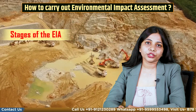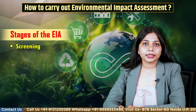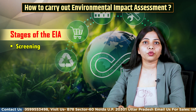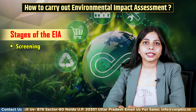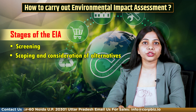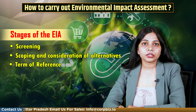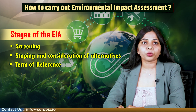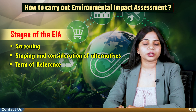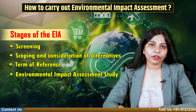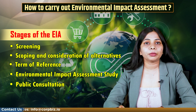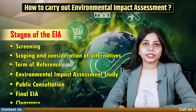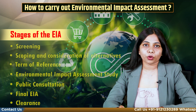Now let's see the stages of EIA. First is screening, where the scrutiny agency will identify whether the B category project falls under B1 or B2. Second is scoping and consideration of alternatives. Third is term of reference, which consists of methodology, scope of the project, and timeline for carrying out environmental impact assessment. Fourth is the environmental impact assessment study. Fifth is public consultation and sixth is the final EIA report. Seventh is the grant of EC, which is the clearance process.